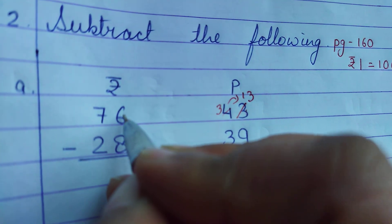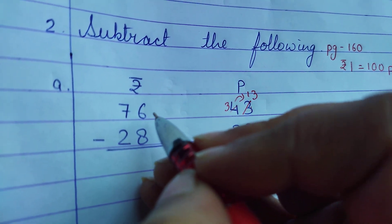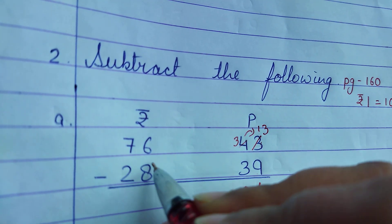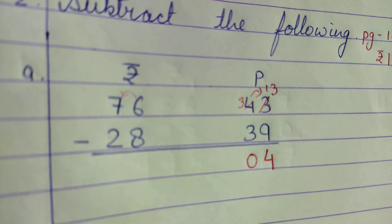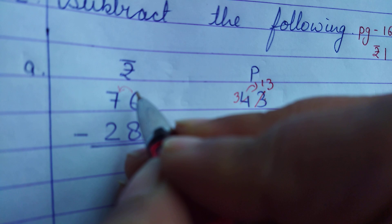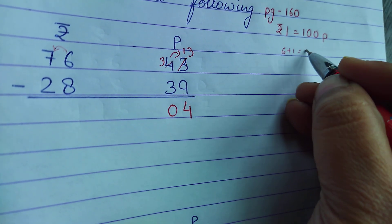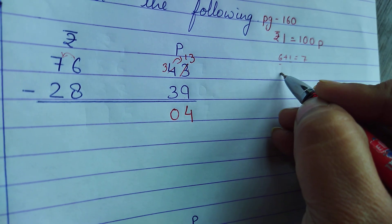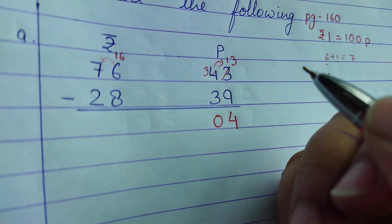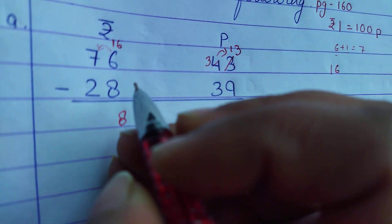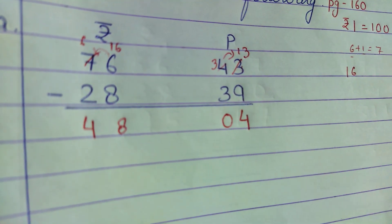Now for the rupees: 6 minus 8 is not possible, so 6 borrows from 7. The 7 gives 1, so 6 becomes 16. 16 minus 8 is 8, and 6 minus 2 is 4. So the answer is 48 rupees and 4 paise.